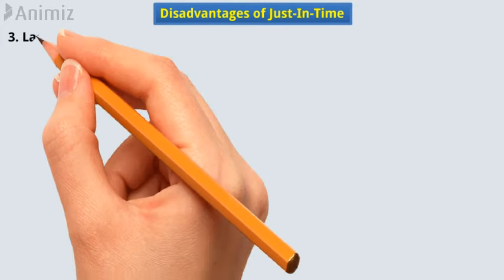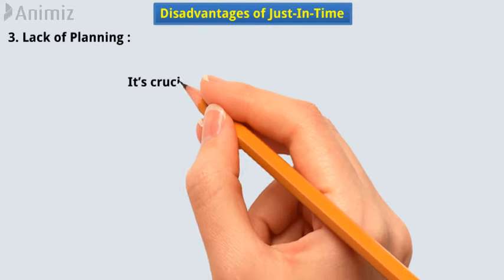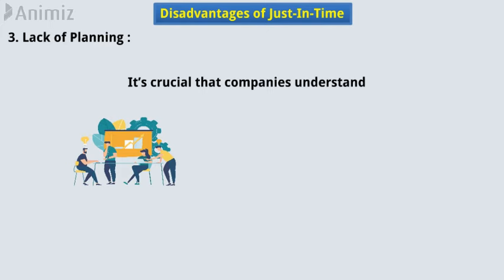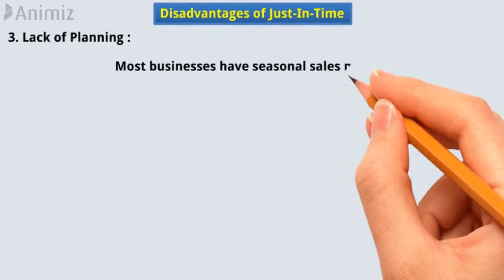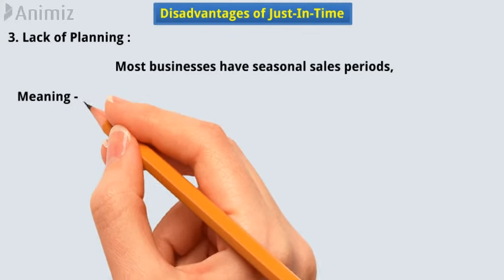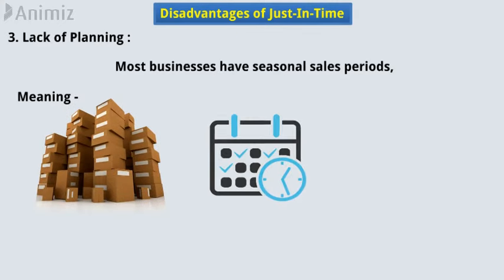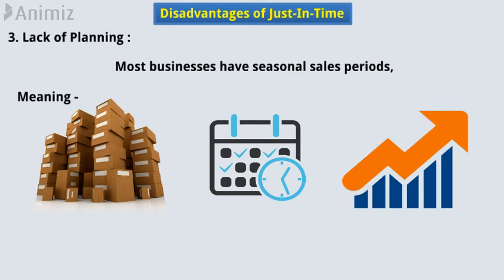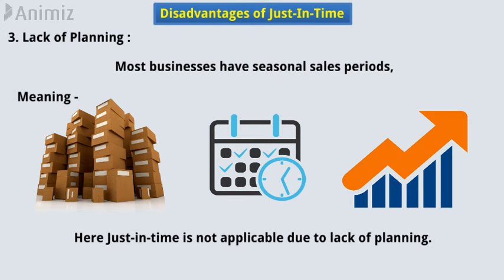3. Lack of planning. With Just-in-Time inventory management, it's crucial that companies understand their sales trends and cycles in close detail. Most businesses have seasonal sales periods, meaning a number of products will need a higher stock level at certain times of the year because of increased demand. In such cases, Just-in-Time is not applicable due to lack of planning.